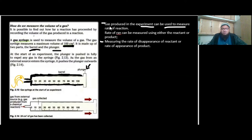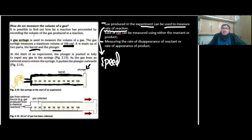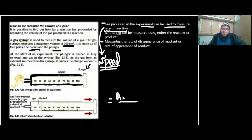Gas which is produced in an experiment can also be used to measure the rate of reaction. Rate of reaction means the change in quantity with respect to time — in other words, the speed. Just like speed is distance traveled per unit time in physics, here in a reaction mixture it is the amount of molecules that have reacted per unit time. The rate of reaction can be followed using the gas produced by applying the formula: amount of gas produced per unit time. This gives us the speed at which the reaction is taking place.